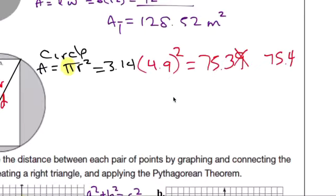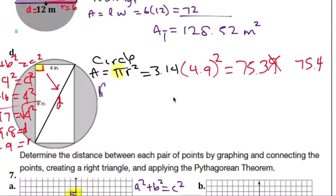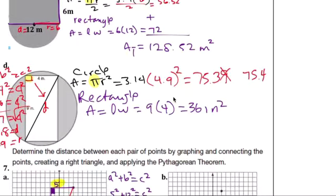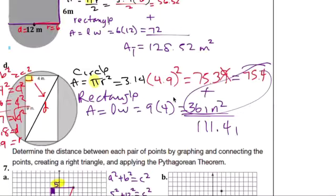Now the next shape is the rectangle. Area of a rectangle is length times width. 9 times 4, you get 36 inches squared. And at the end, we add these two together. We get 111.4 inches squared. That is the total area. A T is total area.